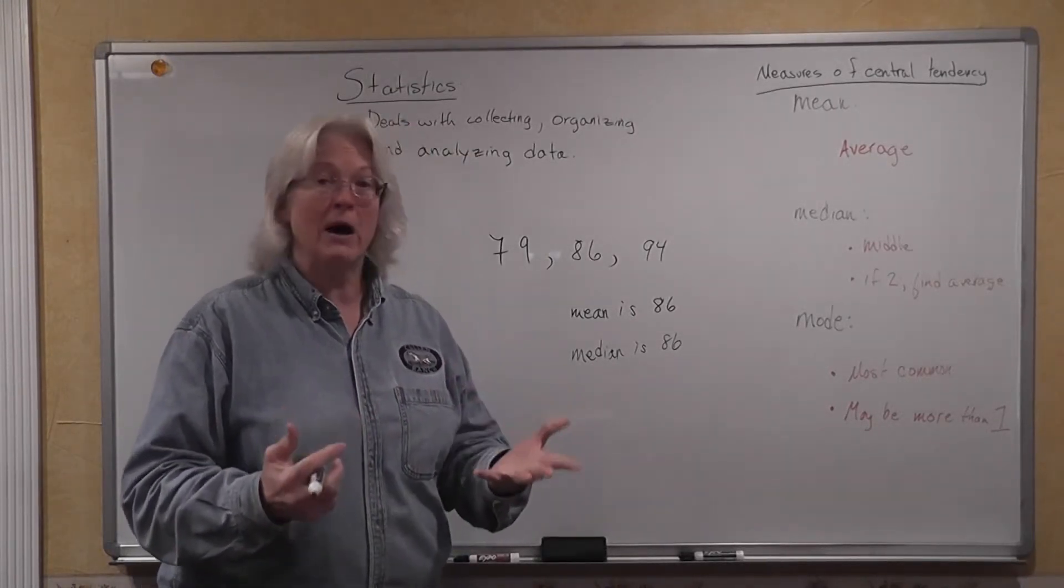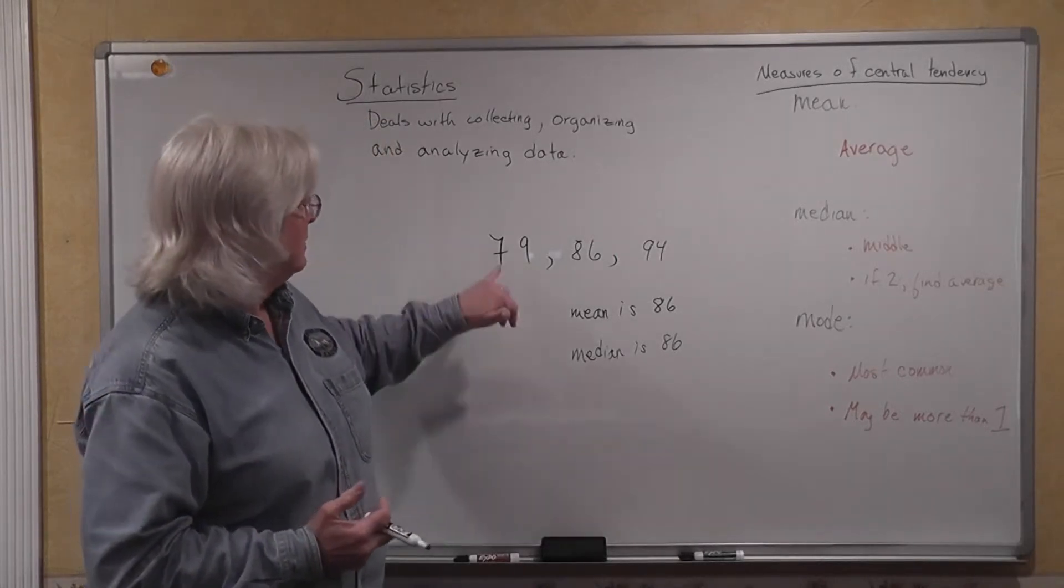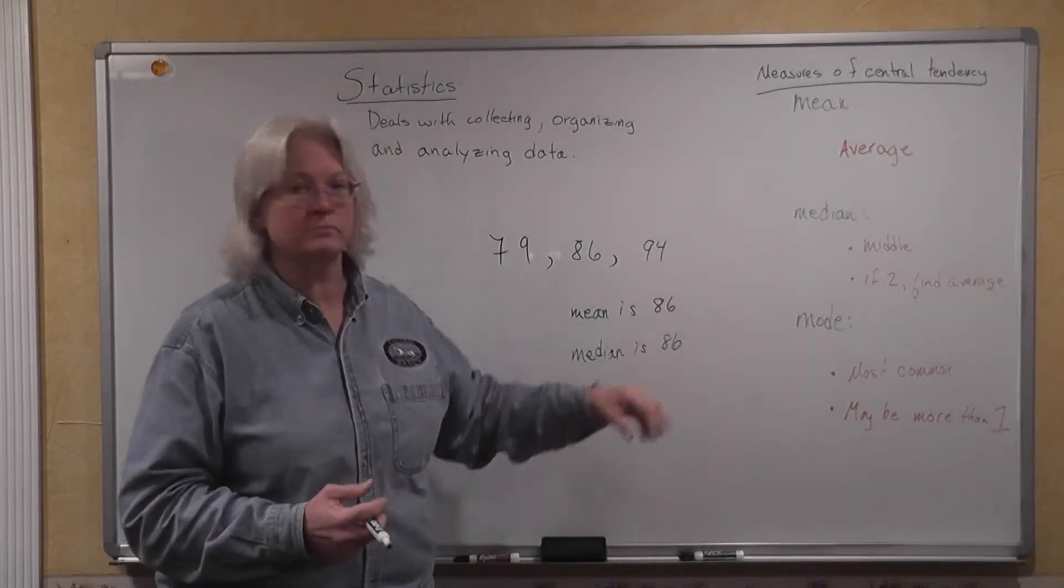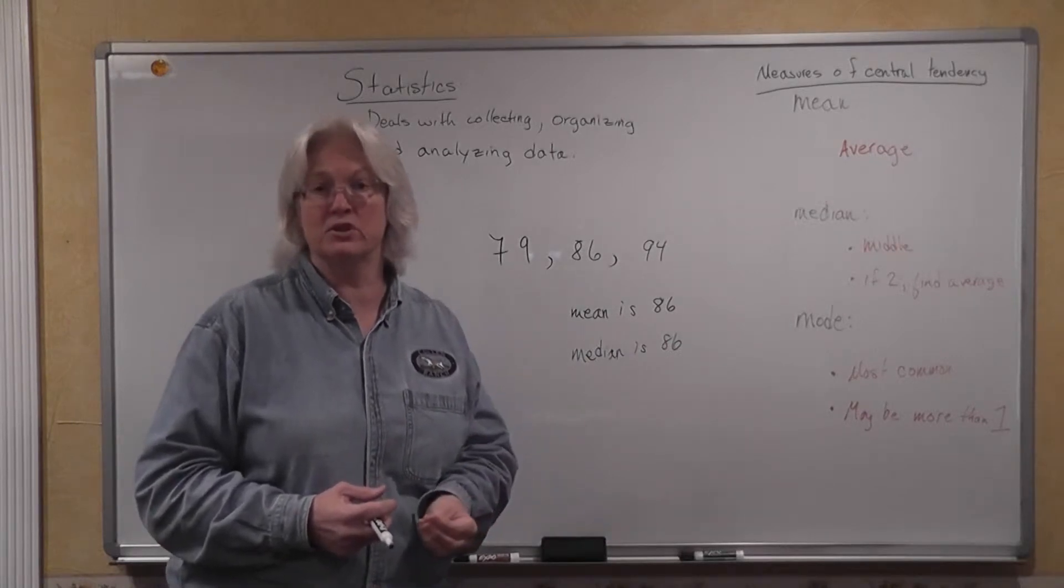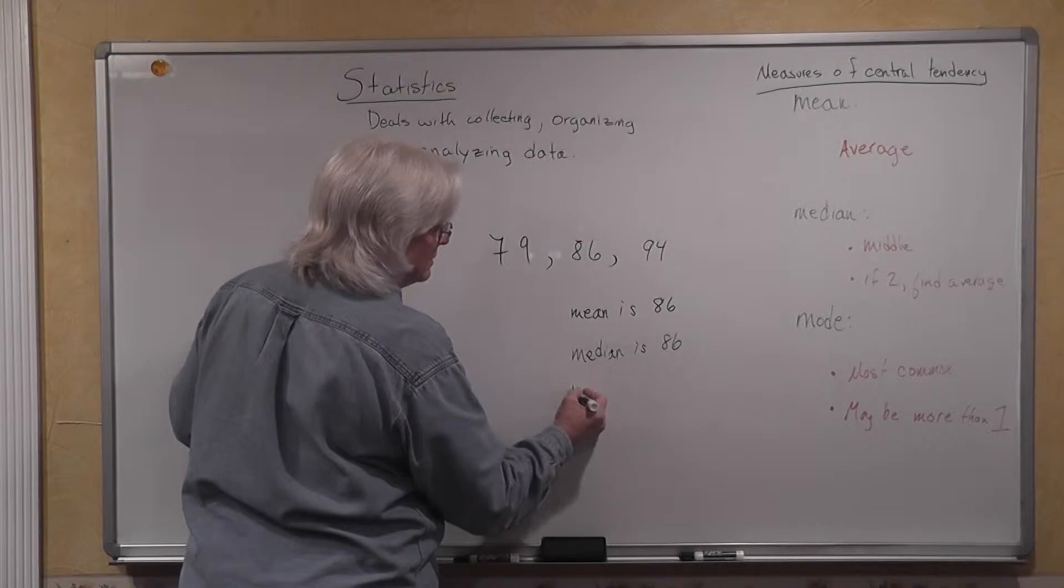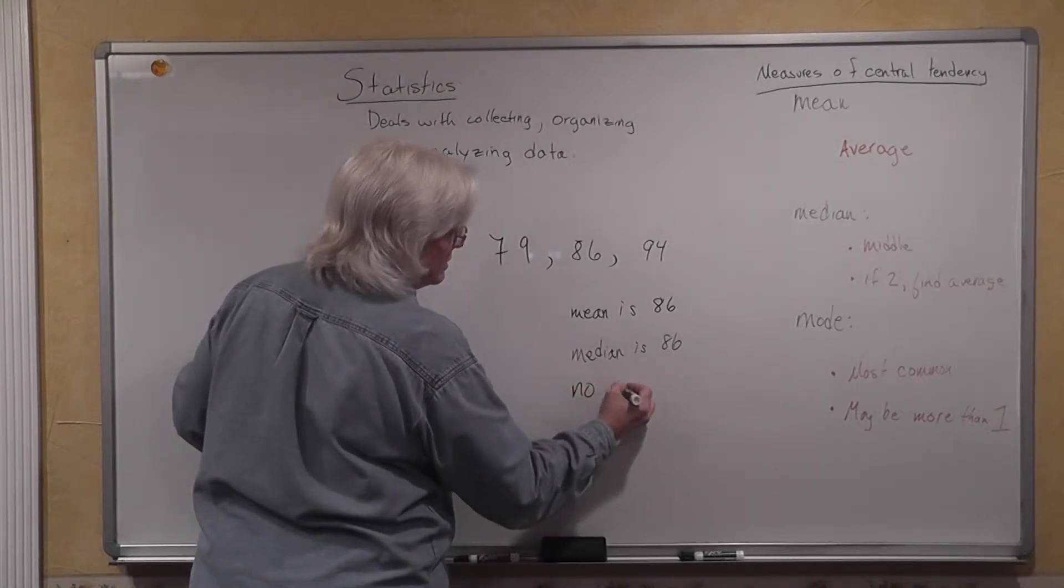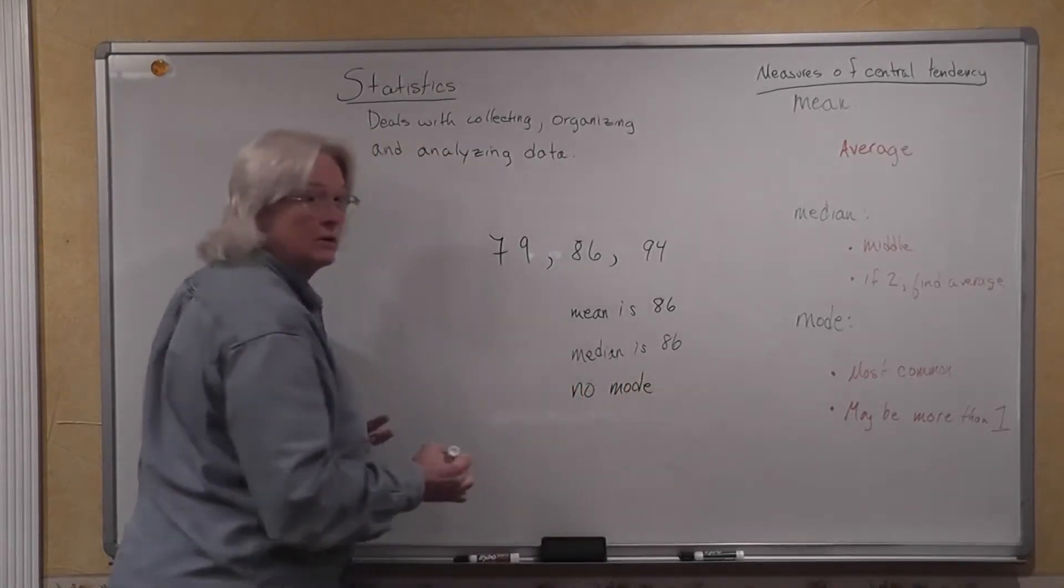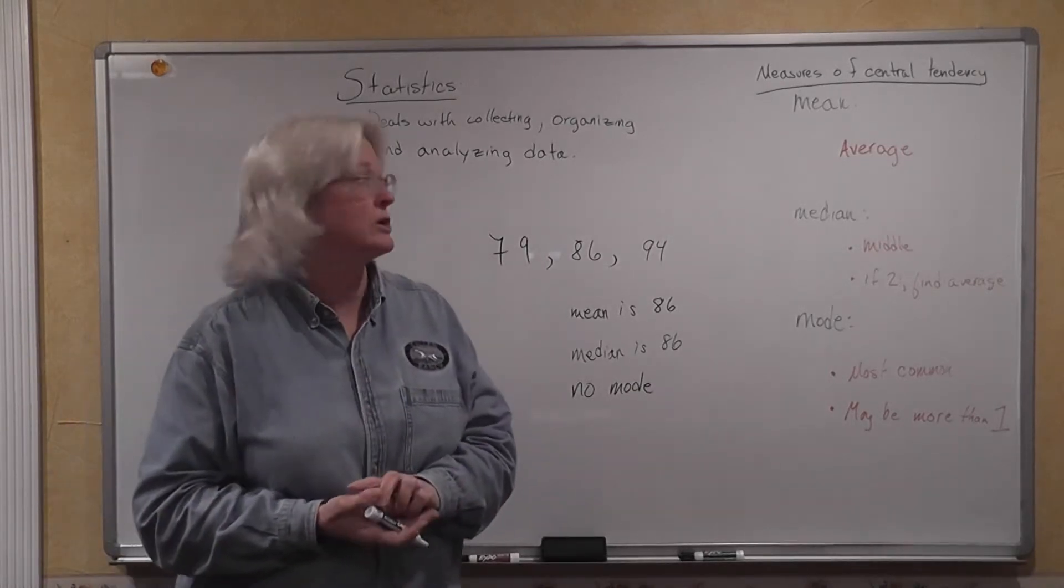But the mode is going to be the number that occurs most frequently. And you can have more than one mode, and you might also have no mode. We have 79, 86, 94. Not one of those numbers is used more than once, so you would say that there is no mode.